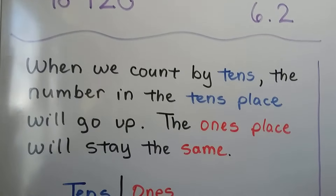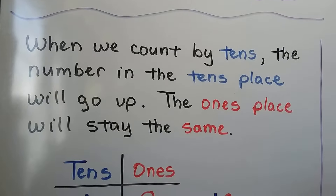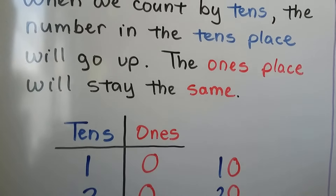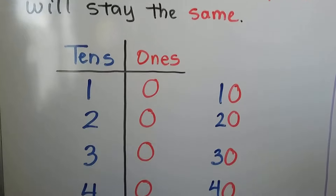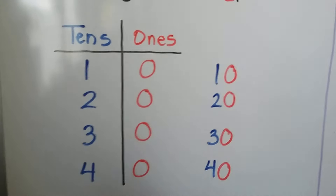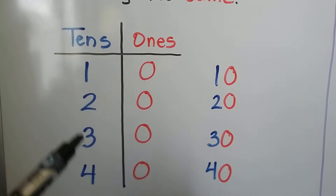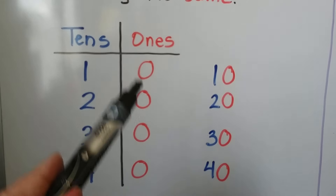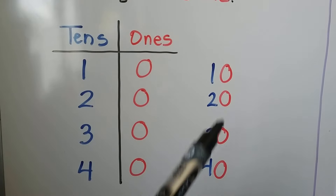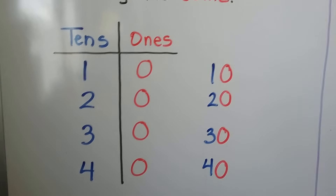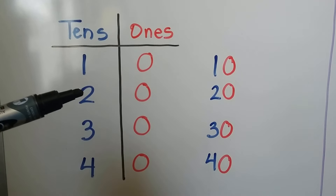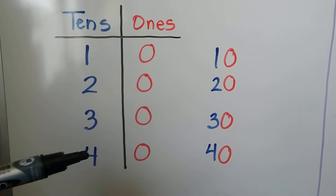When we count by tens, the number in the tens place will go up. The ones place will stay the same. If we split a number into tens and ones, the number on the left is the tens place and the number on the right is the ones place. These are the tens, and the zeros are in the ones place. We count by tens, and each number in the tens place goes up by one more.